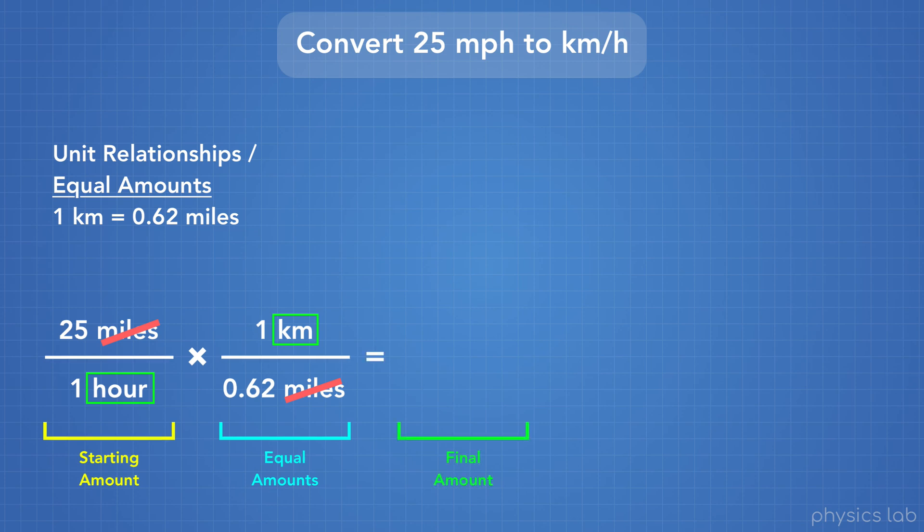To get our answer, we just multiply the top numbers. 25 times 1 kilometer equals 25 kilometers. And then the bottom, 1 hour times 0.62 equals 0.62 hours.